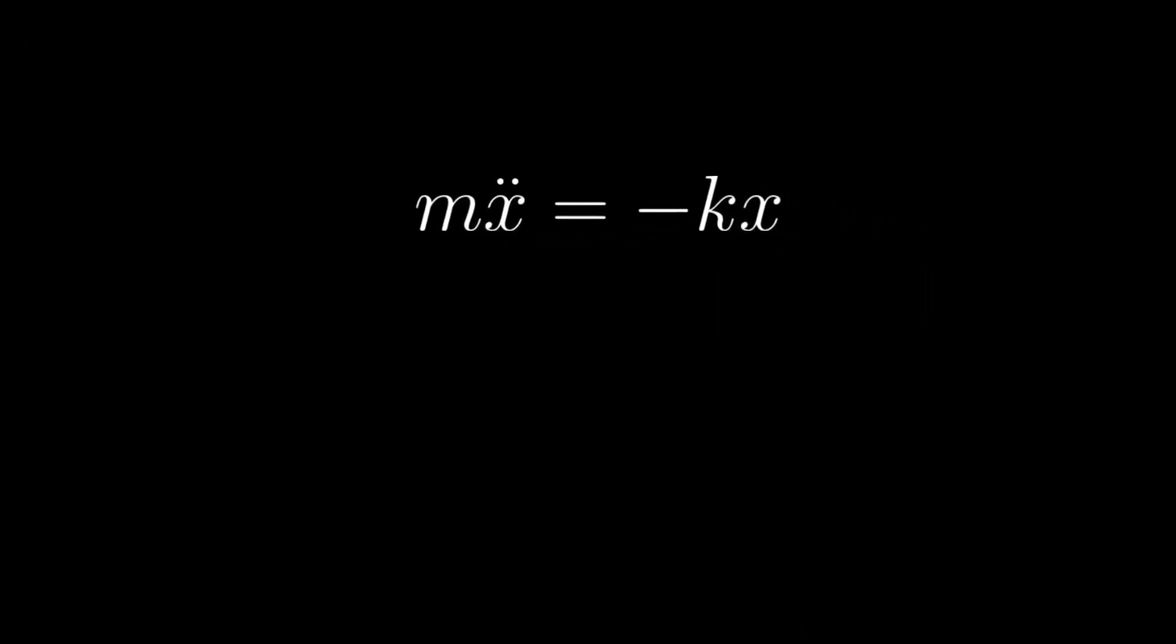The K is known as the spring constant, and it has units of newtons per meter. It corresponds to how strong the spring is.